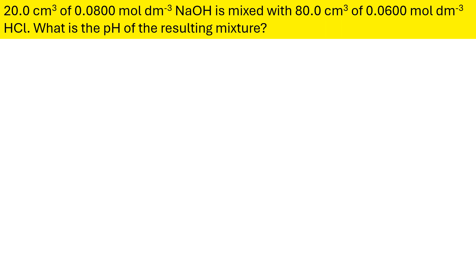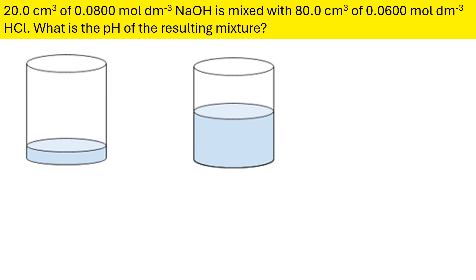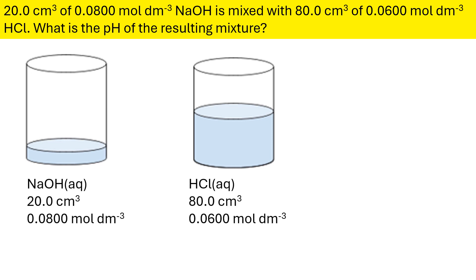When I'm explaining these types of problems, I always start by trying to get people to visualize, because I find it quite easy to get my head around it by visualizing my two samples. I found two pictures of beakers, one with more liquid and one with less. So my sodium hydroxide, which is 20 centimeters cubed, is the smaller amount, and the HCl with the larger volume is 80 centimeters cubed.